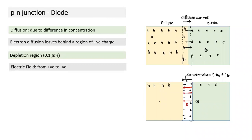The built-in electric field creates a potential barrier across the depletion region. The potential difference equals E × D (field × depletion zone thickness). This potential barrier opposes the diffusion of majority carriers — only holes with kinetic energy greater than q × V_barrier can overcome it. The field exists only within the depletion region, creating a potential rise across it. As the depletion region forms, diffusion current decreases and drift current increases until they reach steady state.